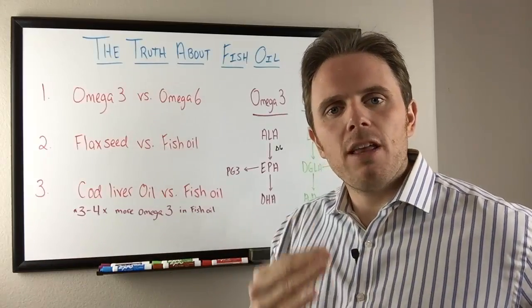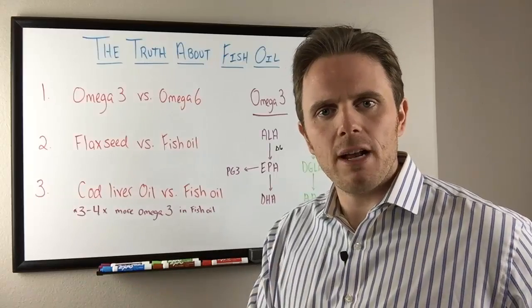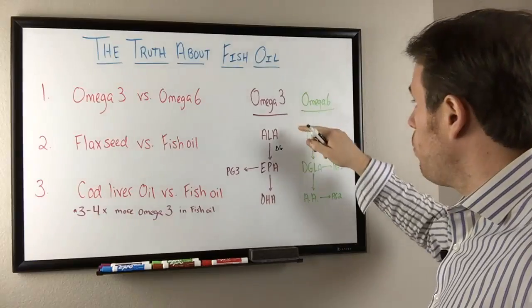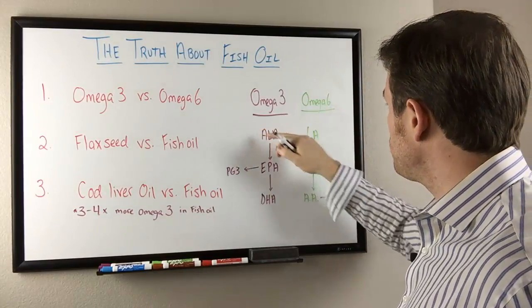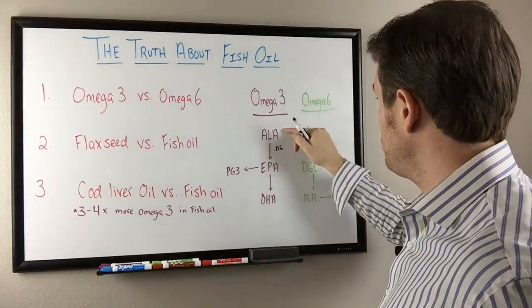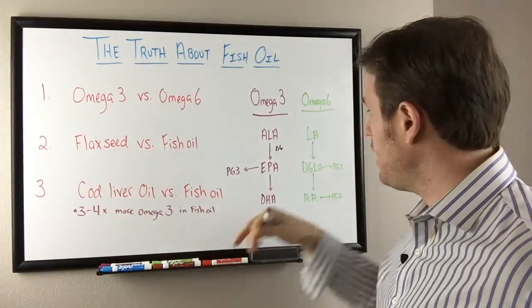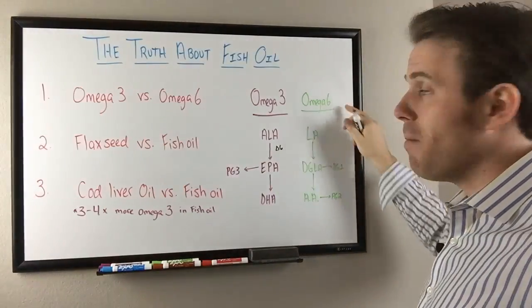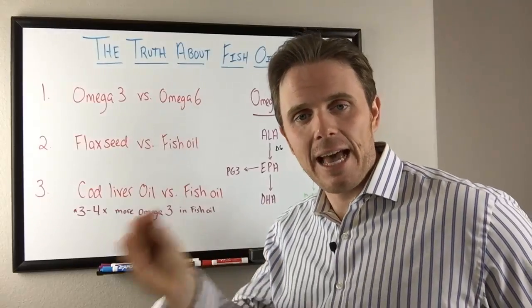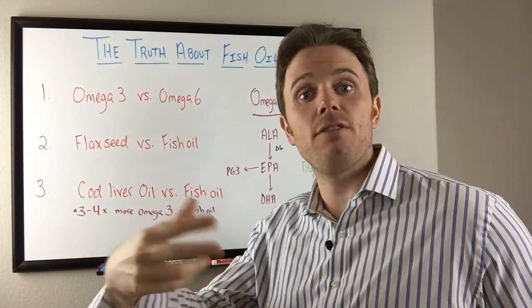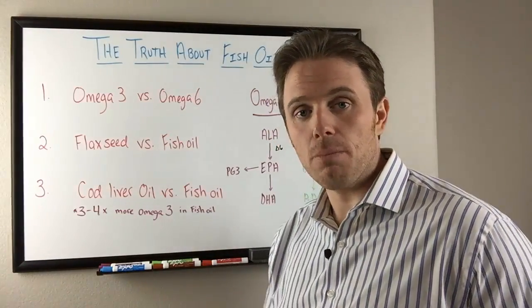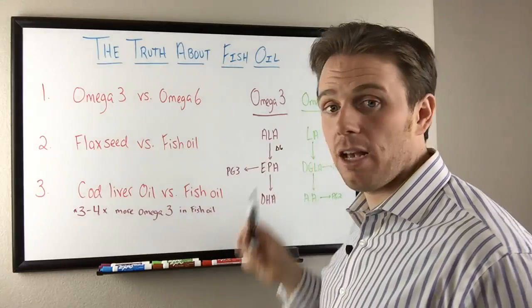We're talking about omega-3 and omega-6 to start. What makes an omega-3 an omega-3 and what makes an omega-6 an omega-6? We have the first omega-3 — these are called our parent essential fatty acids; everything emanates from them. We have ALA, alpha-linolenic acid — the same fat that's in flaxseed oil — and we have linoleic acid, which is an omega-6 fatty acid, while ALA is an omega-3.